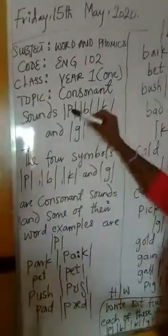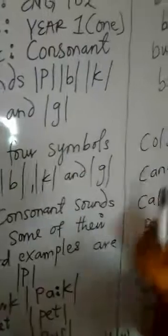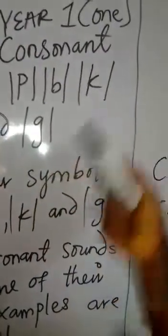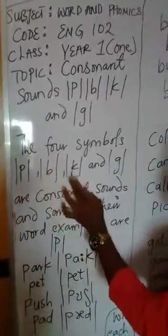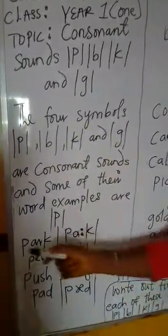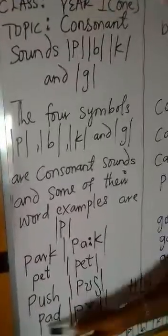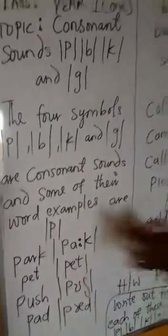Let me pronounce the sounds for you as you pay attention. This is P, this is B, and this is K, followed by G. P, B, K. So these are their various pronunciations. The first symbol, P, B, K and G — a consonant sound. Some word examples include: Pak. This is the transcription. Pak. Award, Paid — you can get the various transcription.